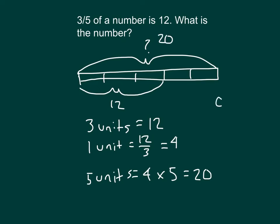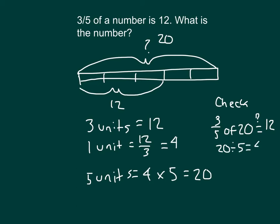Let's check that. Does three fifths of 20 equal 12? One fifth of 20 is 20 divided by five, which equals four. Then we're looking at three of those fours: four times three equals 12. Three fifths of 20 does equal 12. So the number is 20.